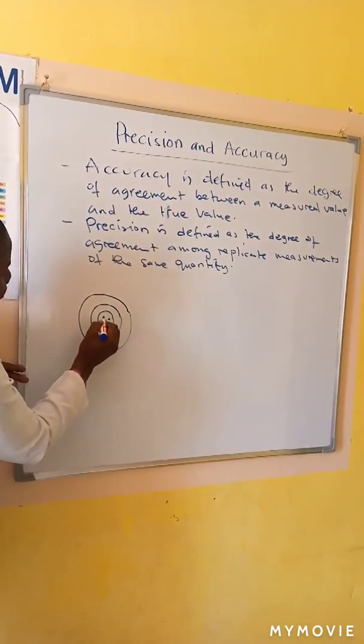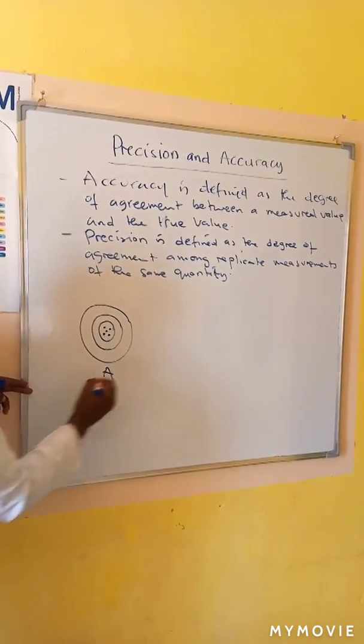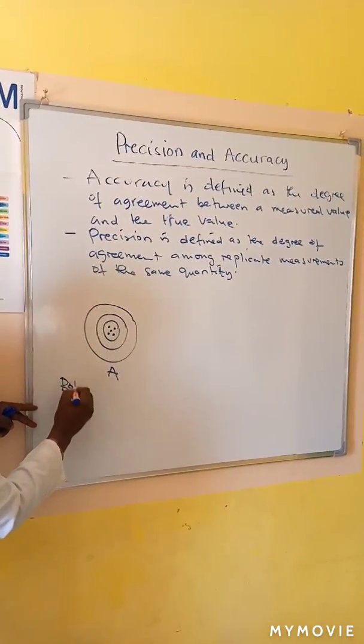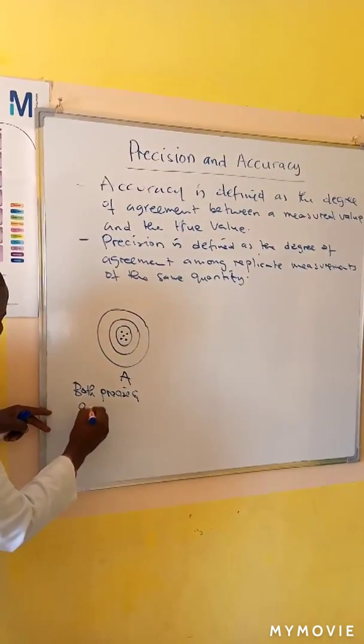If you shoot and all your bullets land here on the target, this means that you are both precise and accurate.